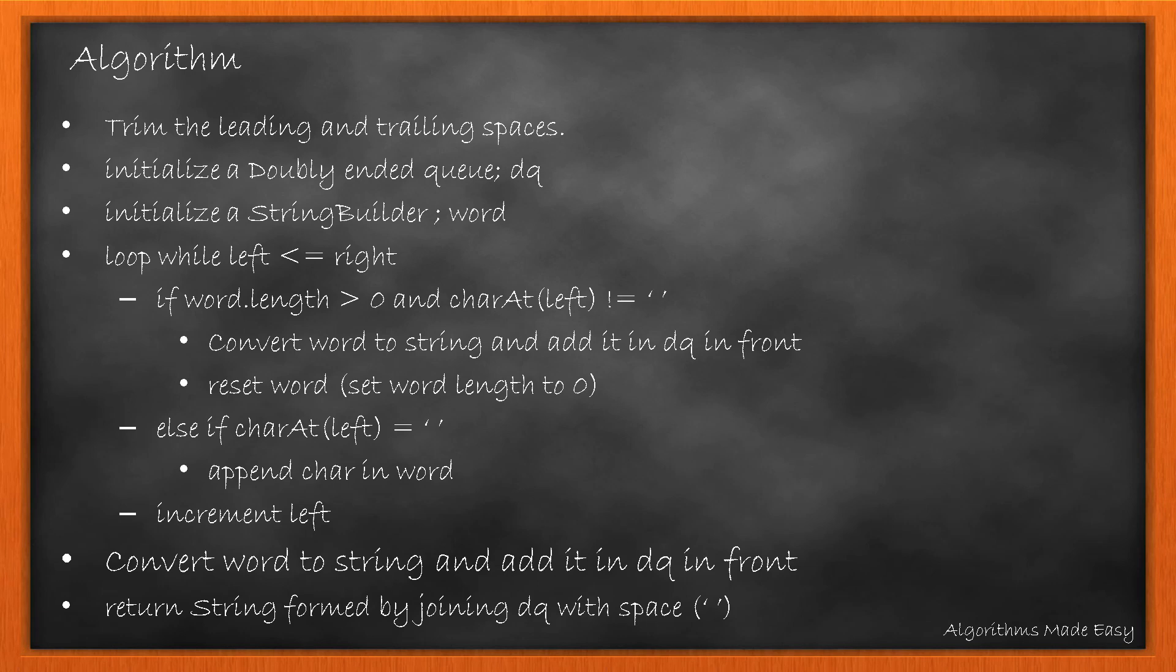Else if the character at left is equal to space, we append the character in word, then we increment the left. At the end, we convert the last word to string and add it in the DQ. Lastly, we return the string formed by joining the DQ with space.